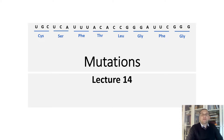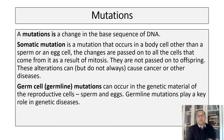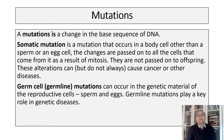If a mutation occurs in a body cell other than a sperm or an egg cell, the changes are passed on to all the cells that come from it as a result of mitosis. These are called somatic mutations. These changes are not passed on to the offspring of the organism. Mutations can also occur in the genetic material of the reproductive cells — sperm and eggs. These are known as germ cell mutations. This type of mutation can be passed to the zygote and show up in the offspring.